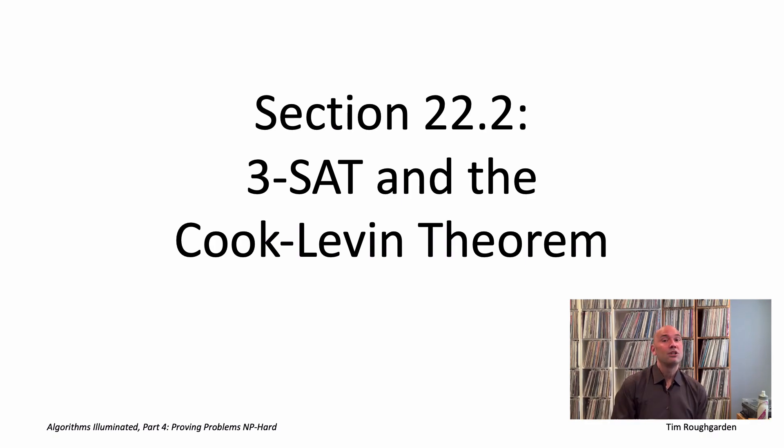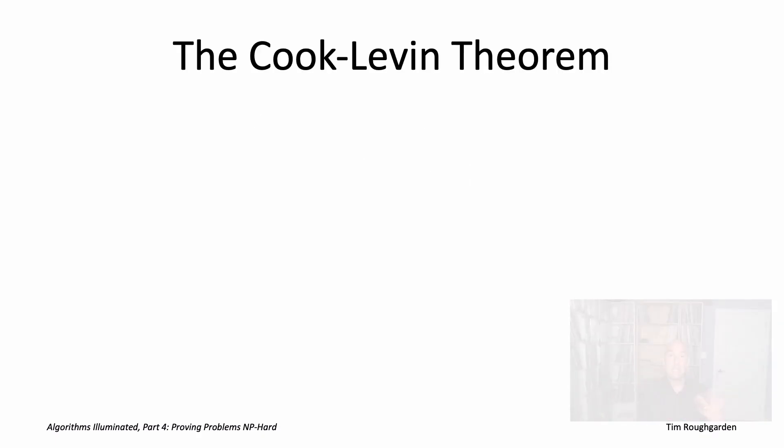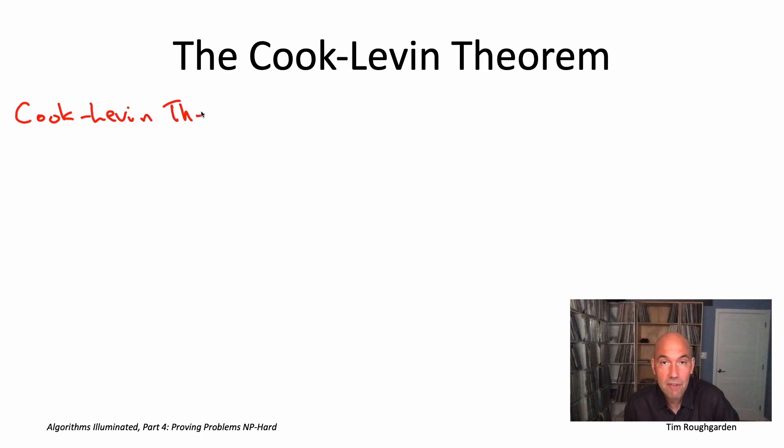From one of the most famous and important results in all of computer science, the Cook-Levin theorem. The formal statement of the Cook-Levin theorem is simply that the seemingly innocuous 3-SAT problem, satisfiability with at most three literals per disjunction, is in fact an NP-hard problem.